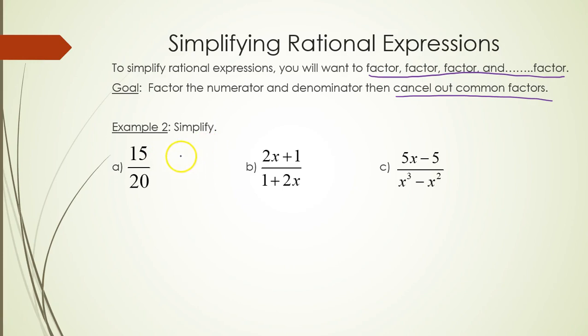Let's start off in example 2 part A with 15 over 20, a basic regular fraction. Notice the top and bottom are both divisible by 5. So dividing the top and bottom both by 5 will leave me with 3 fourths.